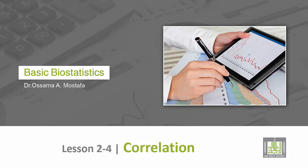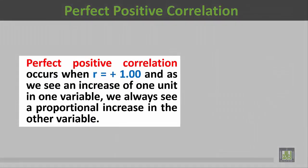Perfect positive correlation occurs when r equals plus 1.00. And as we see an increase of one unit in one variable, we always see a proportional increase in the other variable.